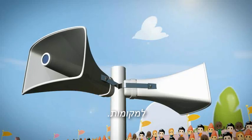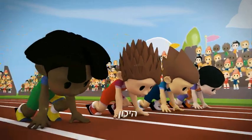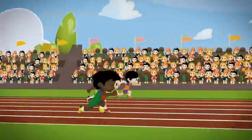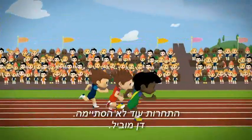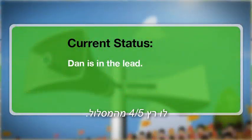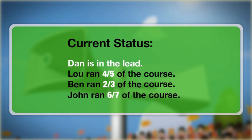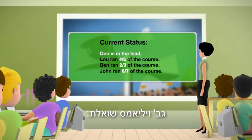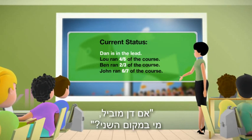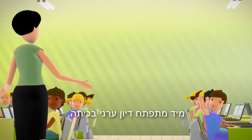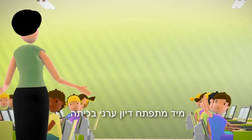On your marks, get set, go! The competition is not over yet. Dan is in the lead. Lou ran four-fifths of the course. Ben ran two-thirds of the course. John ran six-sevenths of the course. Miss Williams asks: if Dan is in the lead, who is in second place? A lively class discussion immediately ensues.